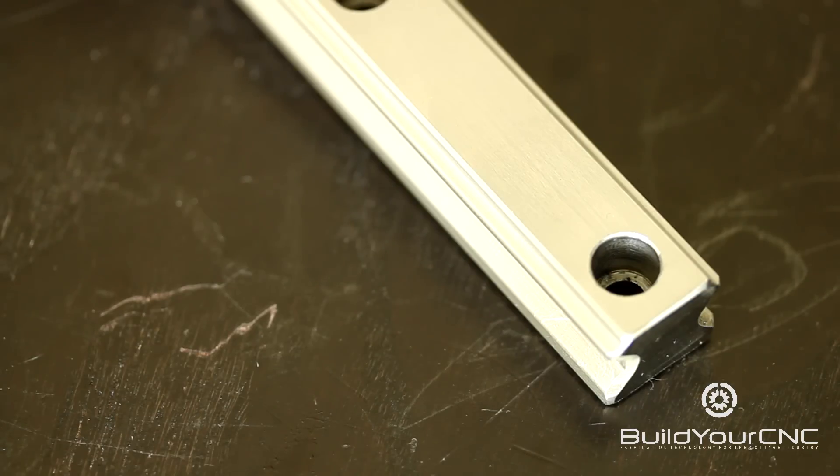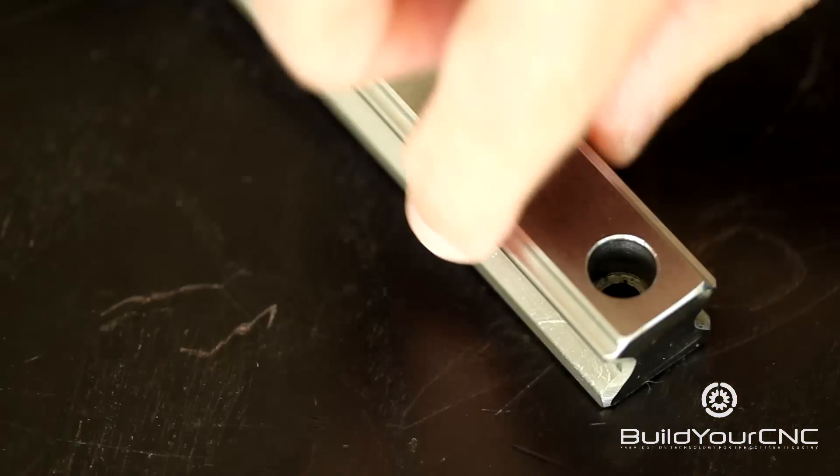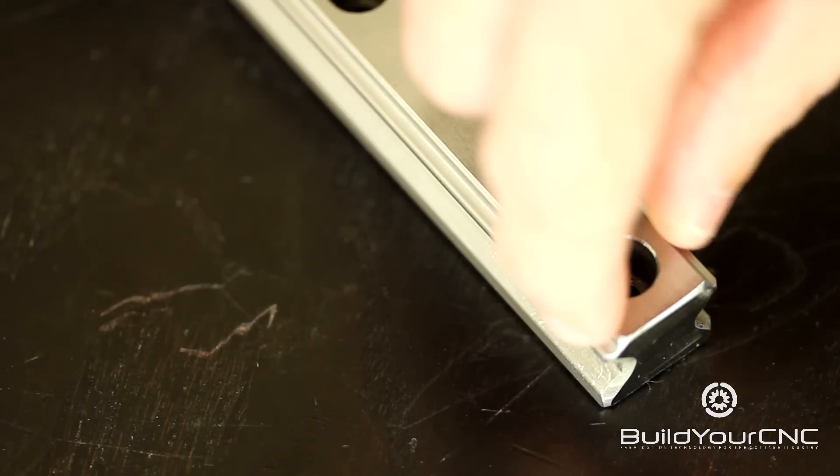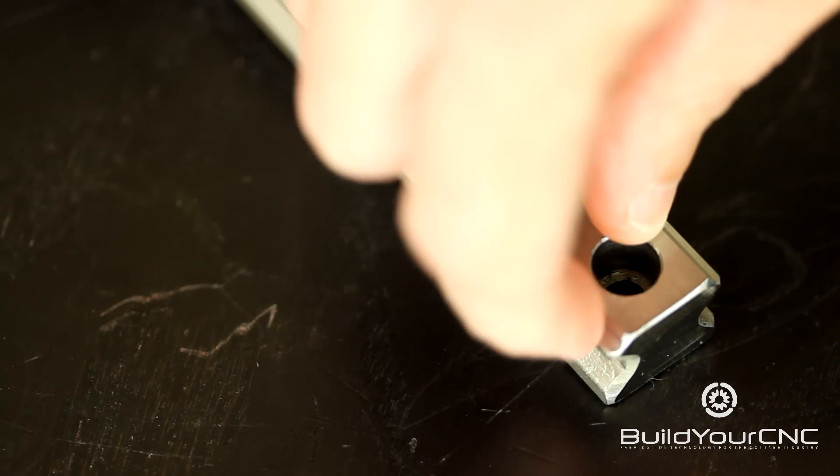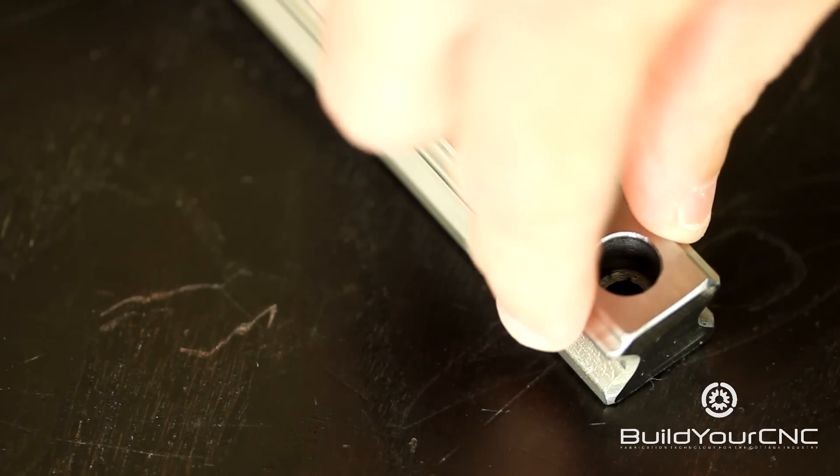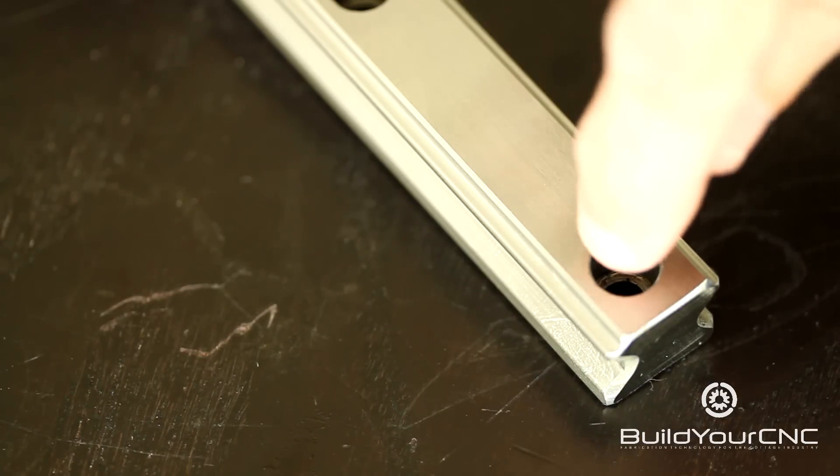The mounting configuration for this rail is from the top. The top part of the rail is where this configuration or the sharper points are located and mounting is from the top down.